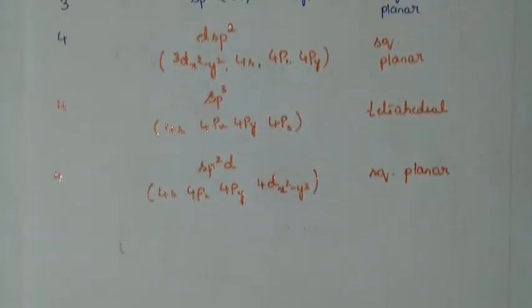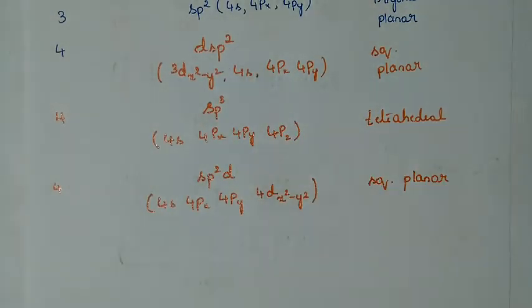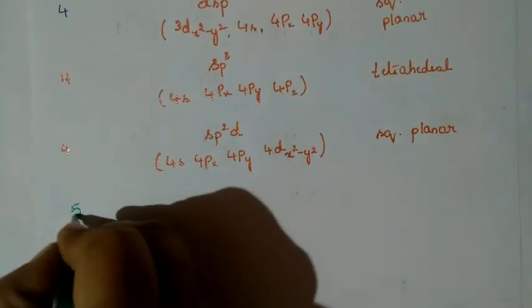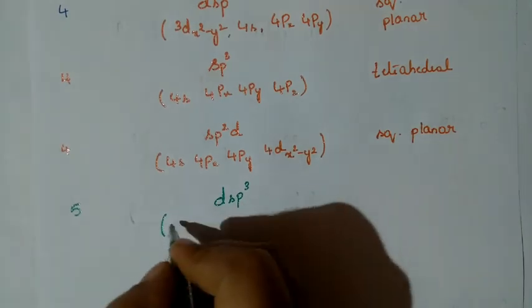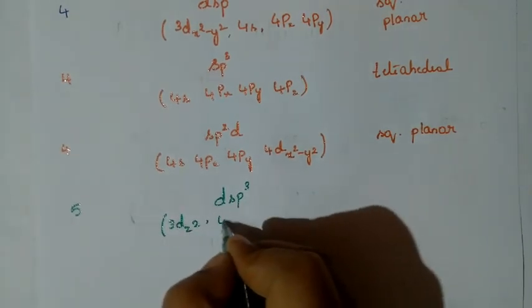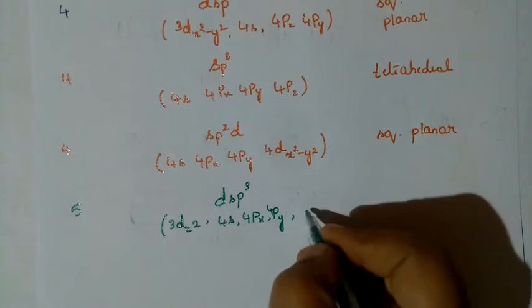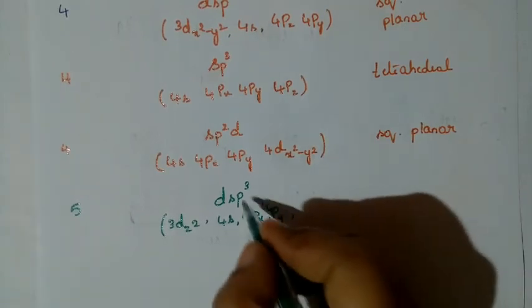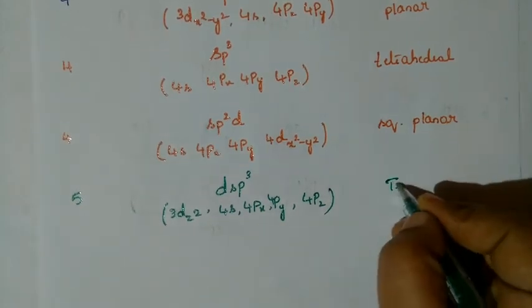So for coordination number 4, three different hybridizations are possible giving two different geometries. For coordination number 5, one possibility is DSP3, which involves 3D z², 4S, 4PX, 4PY, and 4PZ — one D, one S, and three P orbitals. The geometry is trigonal bipyramidal.